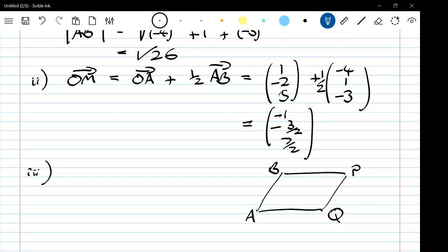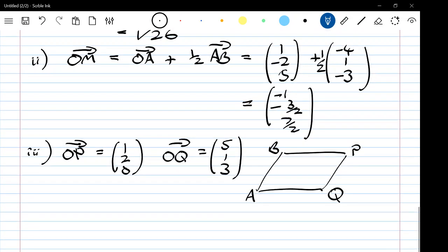So what have we got? We're given OP is (1, 2, 0), and OQ is (5, 1, 3). So let's think about working through this. I'm going to calculate the vector AB.